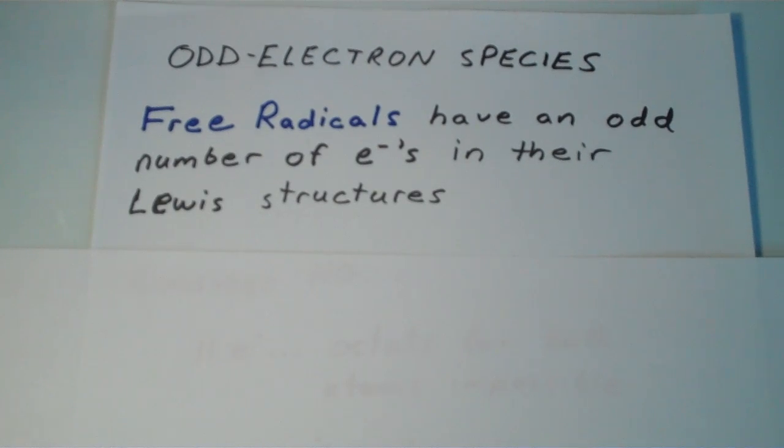Another important exception to Lewis theory involves odd electron species. Certain molecules and ions, which are called free radicals, have an odd number of valence electrons when represented as Lewis structures.